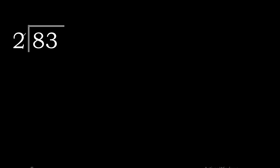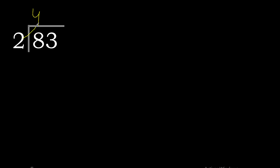83 divided by 2. 8 is not less than 2, so we start with 8. 2 multiplied by 5 is 10 — too big. 2 multiplied by 4 is 8. 8 minus 8 is 0.